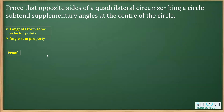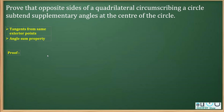This is one question taken from chapter circle, based on the property that tangents from the same exterior point are equal. The question says: prove that opposite sides of a quadrilateral circumscribing a circle subtend supplementary angles at the center.